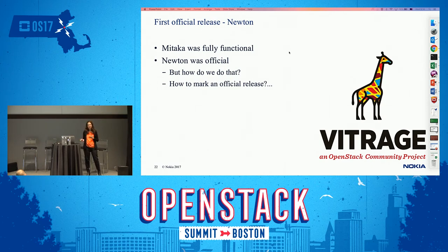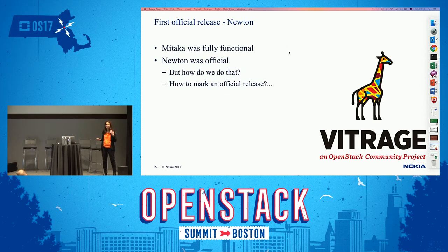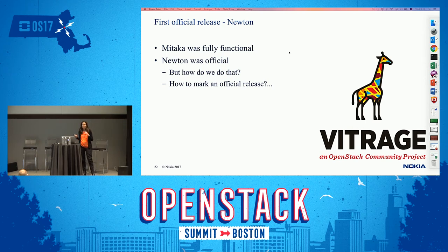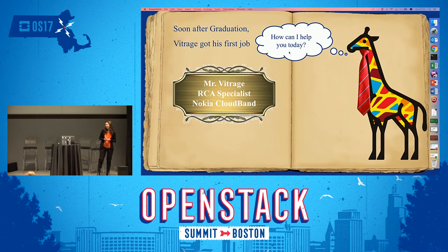After acceptance, the next release about two months later was Newton. Vitrage was released in Mitaka as a stable working release, but not official. In Newton we made an official release — as a new PTL I didn't know how to do it, so I tried and was rejected, tried again, but eventually we got the Newton release. By now we already have Ocata and are working on Pike. Since the beginning of this year Vitrage is already being used in Nokia's products, running in production — a stable project usable both as open source and by other companies.